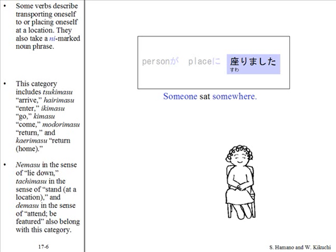This category includes tsukimasu, hairimasu, ikimasu, kimasu, modorimasu, and kaerimasu. Nemasu in the sense of 'lie down,' tachimasu in the sense of 'stand at a location,' and demasu in the sense of 'attend' also belong with this category.